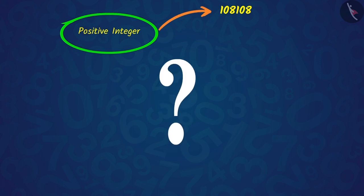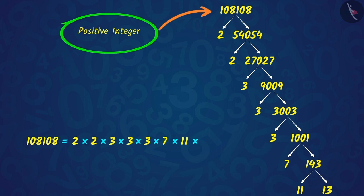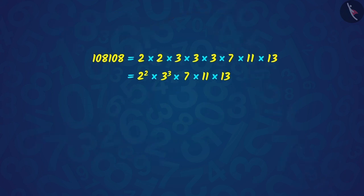Can you show how to factorize this number? Perfect! We can find its factors with the help of a factor tree. In this way, we can factorize 108,108 as a product of prime numbers, which is in the form of powers of prime numbers.